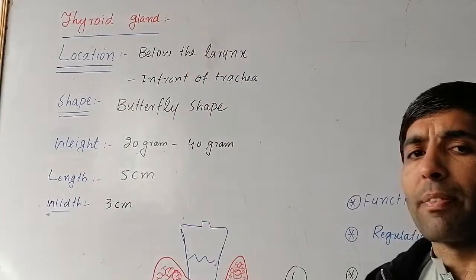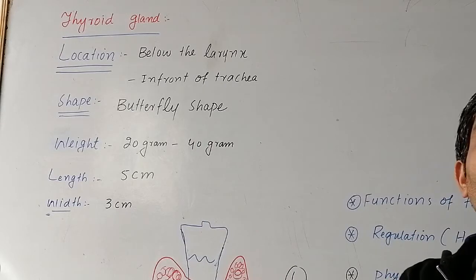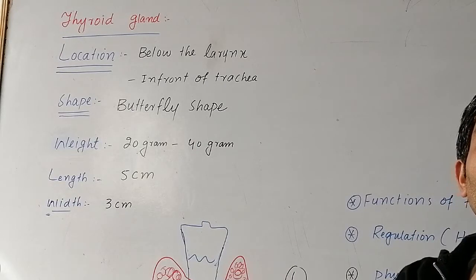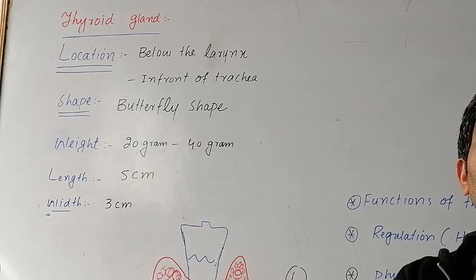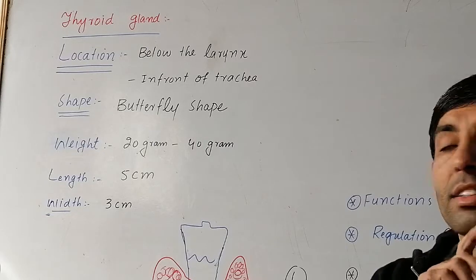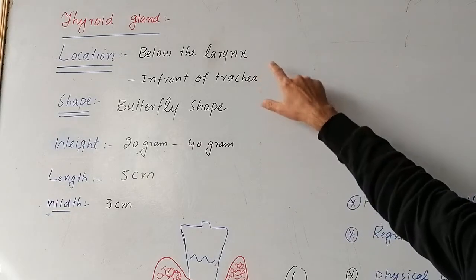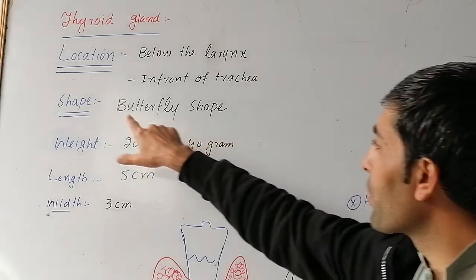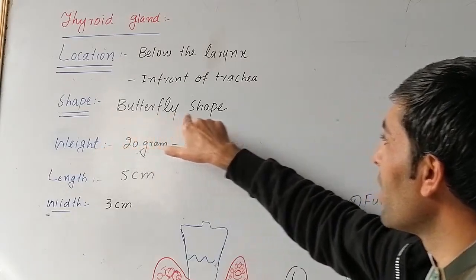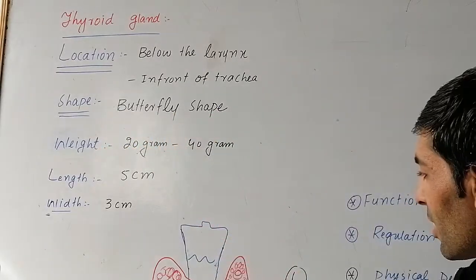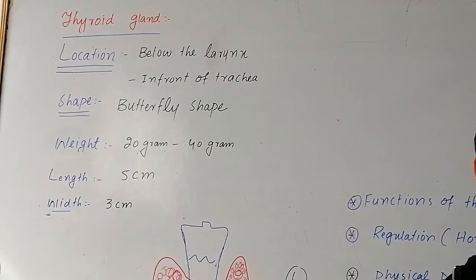Thyroid gland is located below the larynx, in front of the trachea. The shape is a butterfly shape.